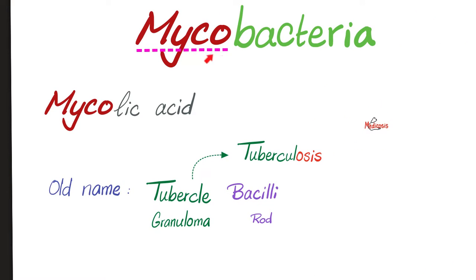Why did we call it Mycobacterium? Bacterium, because it's a bacterium. Myco, because it has mycolic acid. Myco means fungus, because it has some branches, some filaments that look like the hyphae of a fungus. But, to be honest, the filamentous branches of Mycobacterium tuberculosis are not as robust compared to those of Nocardia.